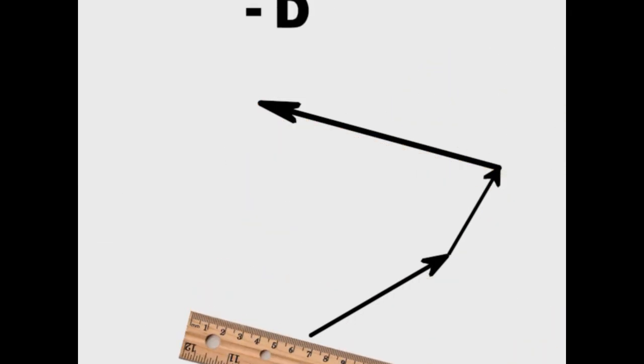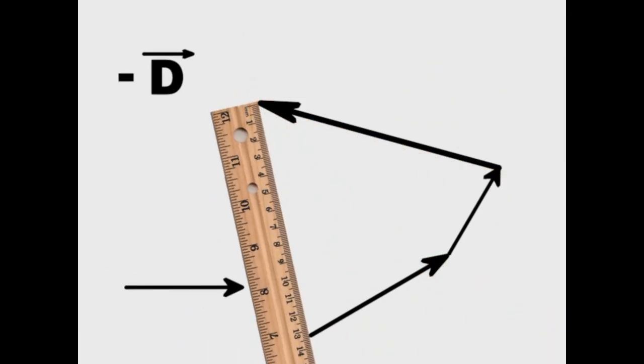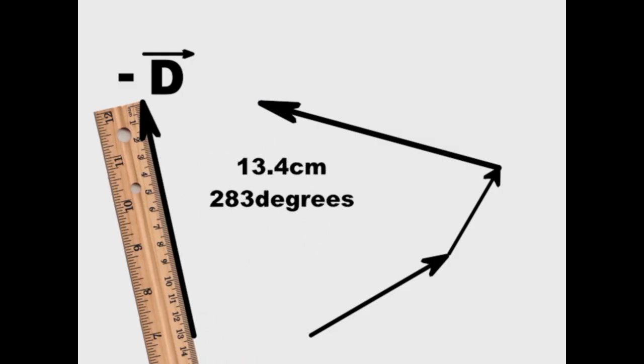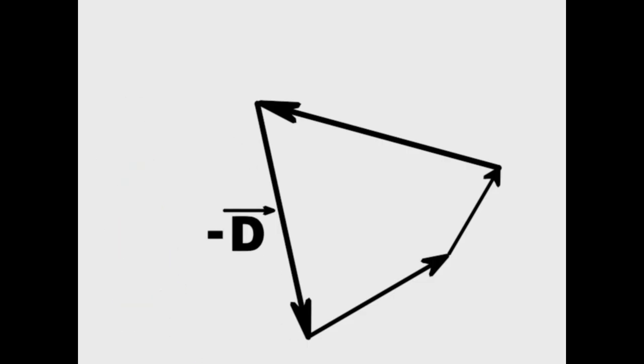We now have to subtract a vector. To do this, we take the positive version of our vector and turn it 180 degrees. We have now subtracted a vector.